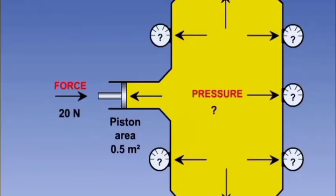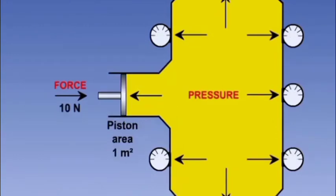If we go back to Pascal's law but this time increase the area of the piston to 1 meter square and keep the force as 10 newtons, then the resultant value will be 10 divided by 1 which is 10 newtons per meter square.